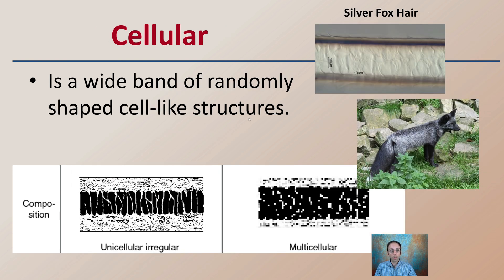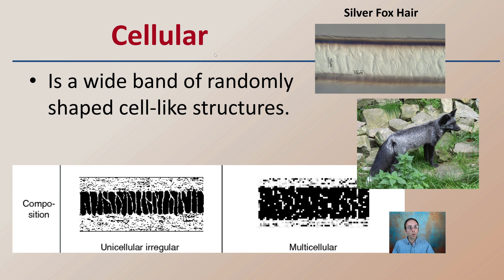The cellular medulla shows a wide band of randomly shaped cell-like structures. The silver fox is an example of this medulla pattern, and each scale bar here represents 10 micrometers.